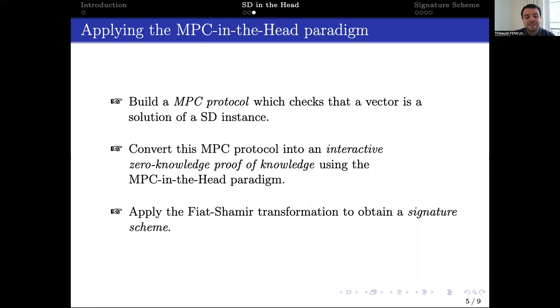Now that we have the exact statement we want to check, we can use the usual techniques to build the wanted MPC protocol. Then, we convert this protocol into an interactive zero-knowledge proof of knowledge using the MPC-in-the-head paradigm. Finally, we applied the Fiat-Shamir transformation to obtain a signature scheme.